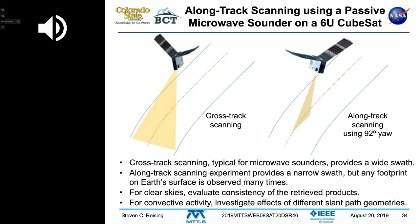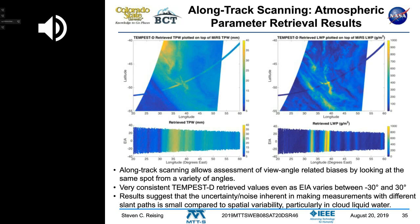The value of along-track scanning is that if you have a constellation of satellites, you'll see storms at different Earth incidence angles. Moving off nadir, the Earth incidence angle varies, and just due to Earth's rotation, storms will move through your field of view every few minutes.